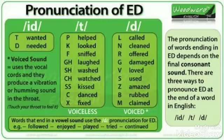What about verbs that end with D or T? It's very hard to add another D or T, so we will use 'ed' — pronounced as ID. For example: wanted, needed.